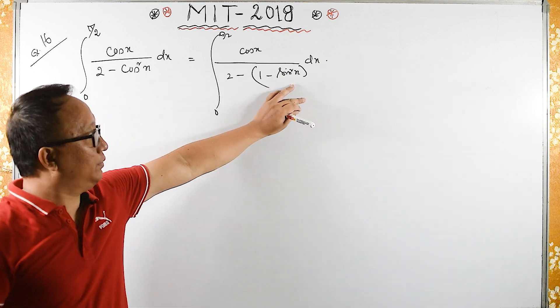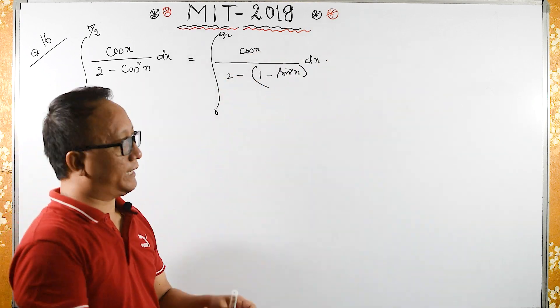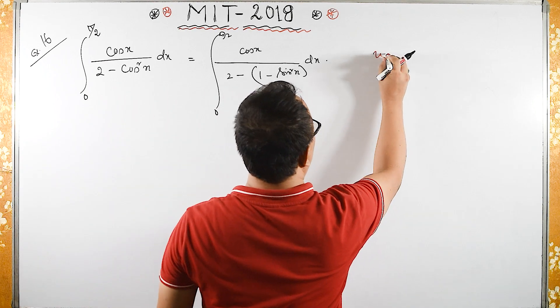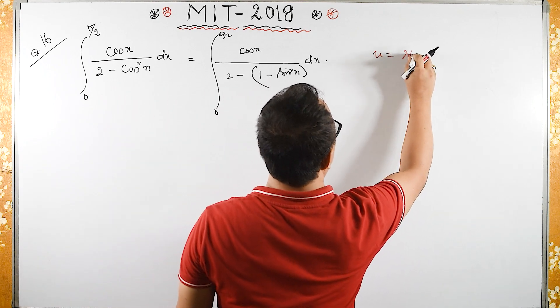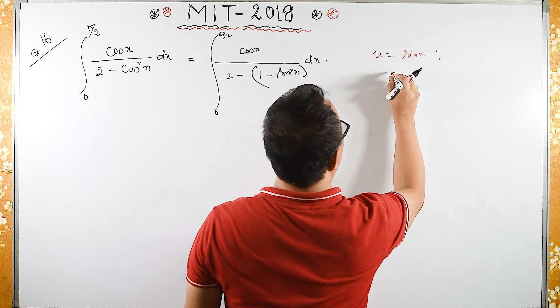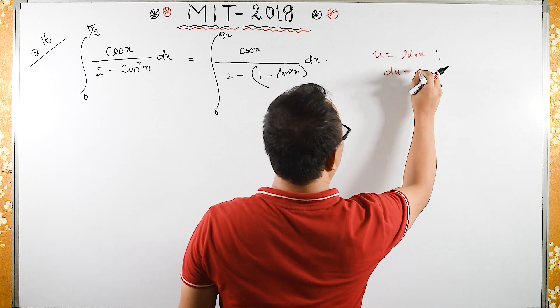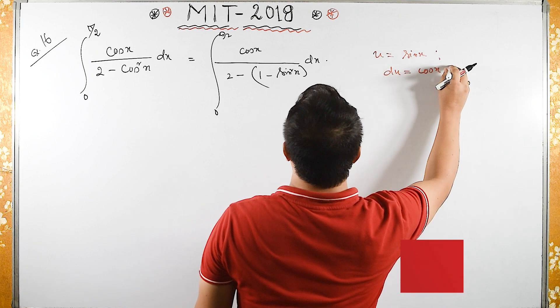I will substitute sin x equals u, and then the differential I will get is cos x dx. So u equals sin x, then my du is the differential of sin, which is cos x into dx.